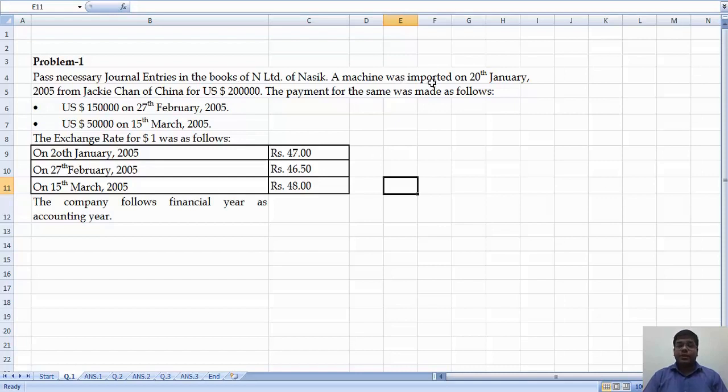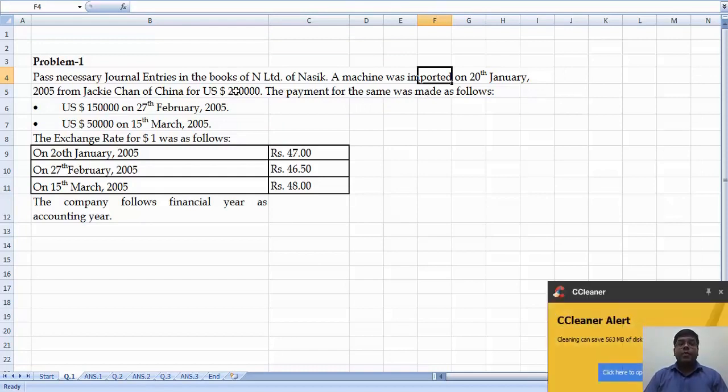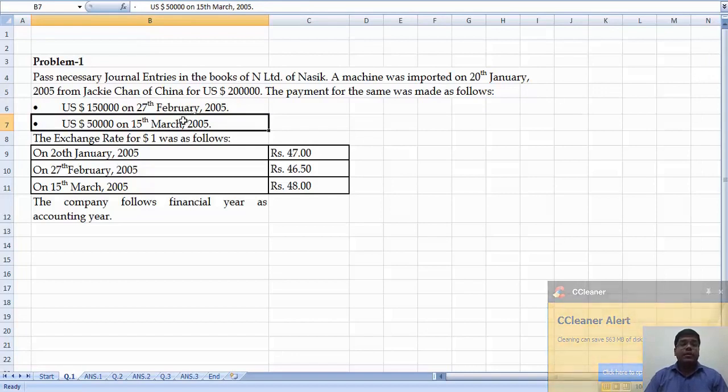So we have imported, so we have to make the payment for whatever we have imported. The payment for the same was made as follows: for 2 lakh amount we have made the payment in 2 instalments, that is on 27th February 2005 and 15th March 2005.